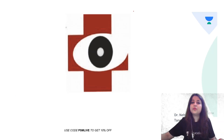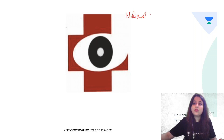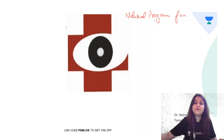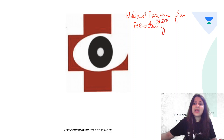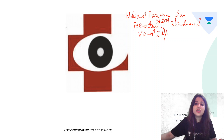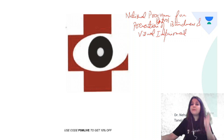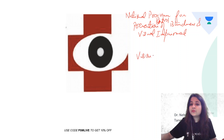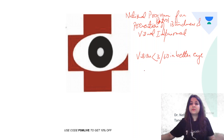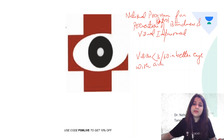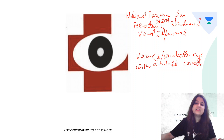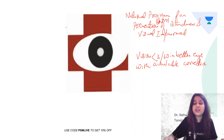Now this is the logo for the National Program for Prevention and Control of Blindness and Visual Impairment. I've brought this logo because there has been a change in the definition of blindness according to our program. The definition of blindness now is vision less than 3/60 in the better eye with available correction — not best possible correction, but available correction. This is very important.